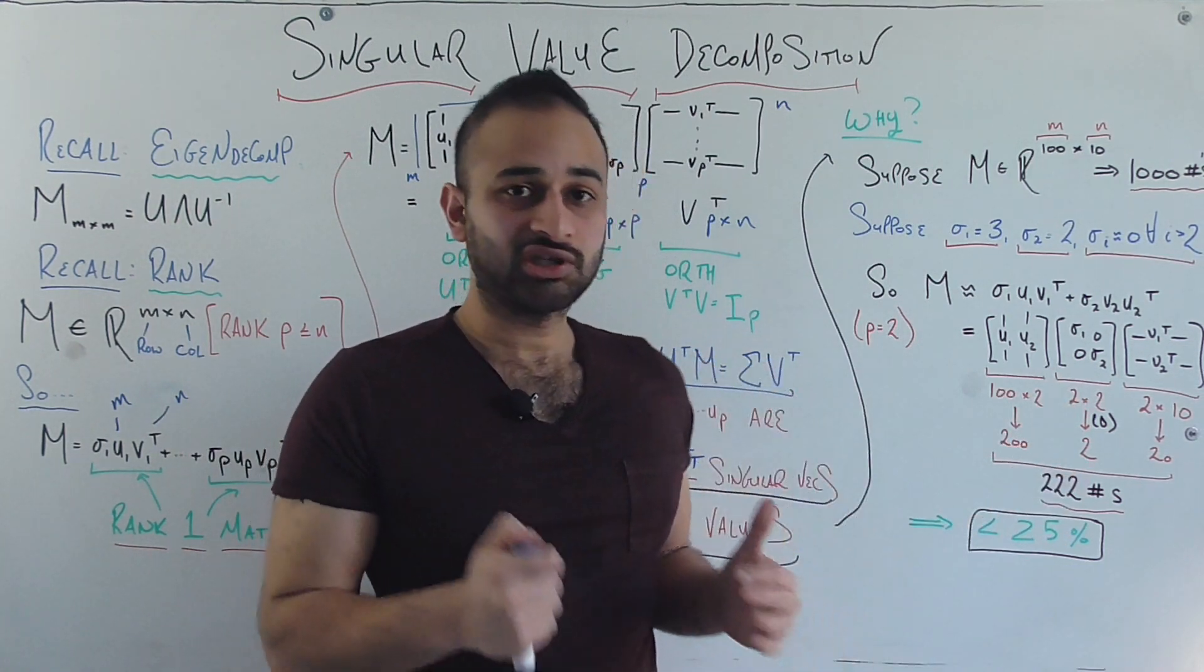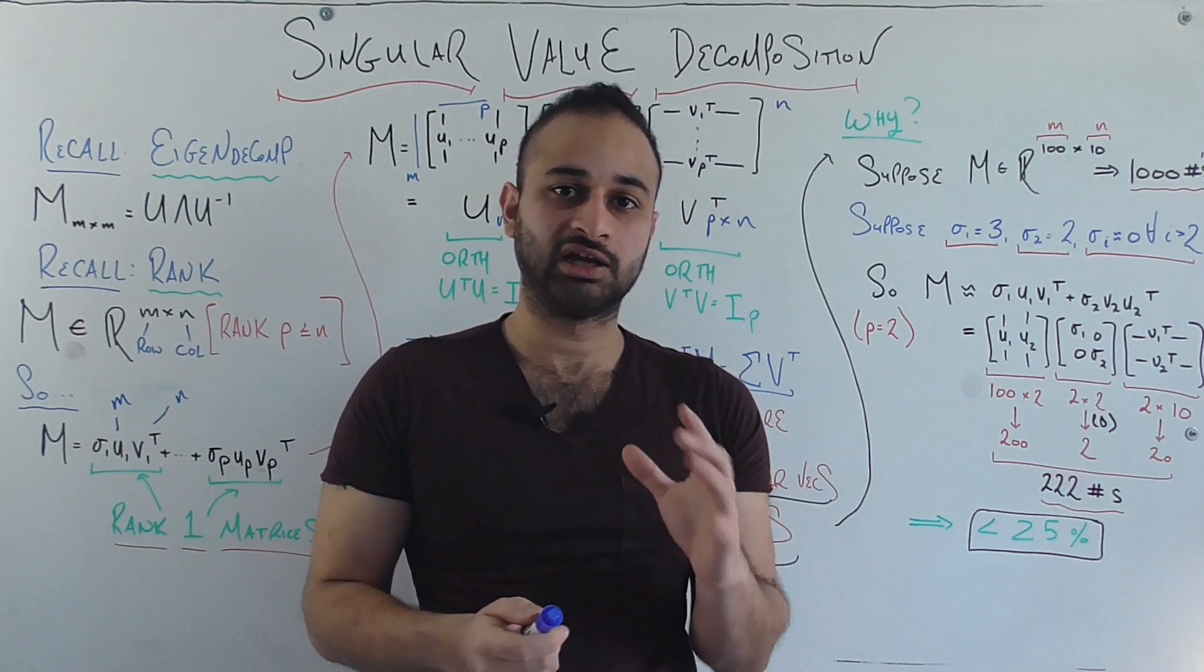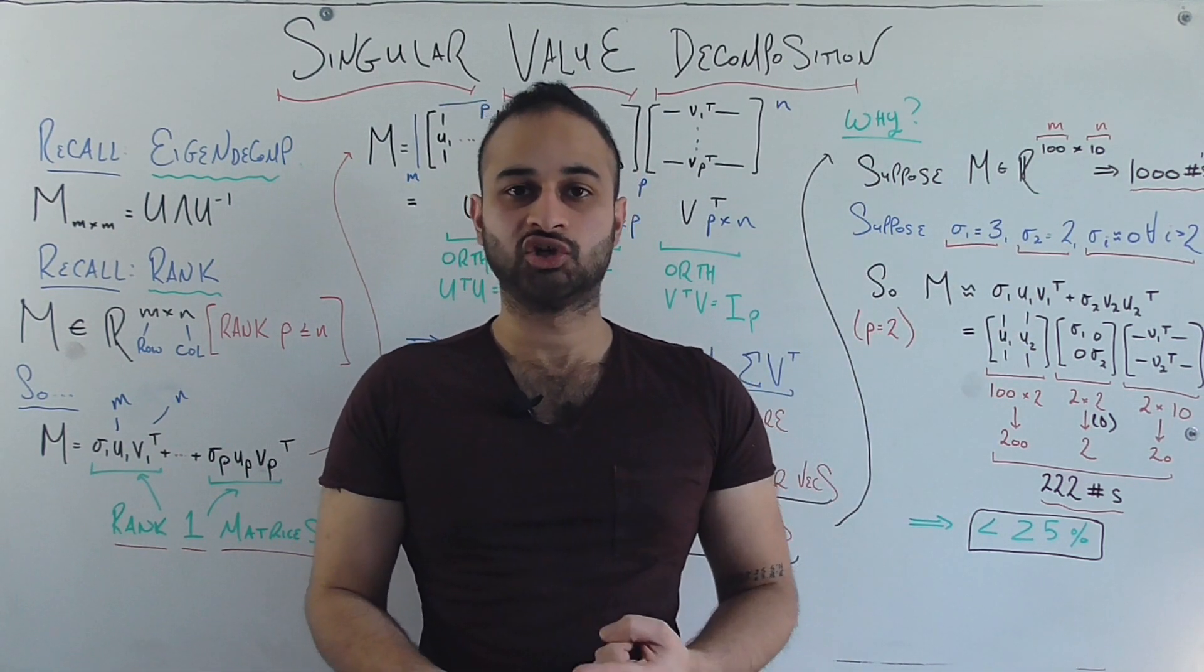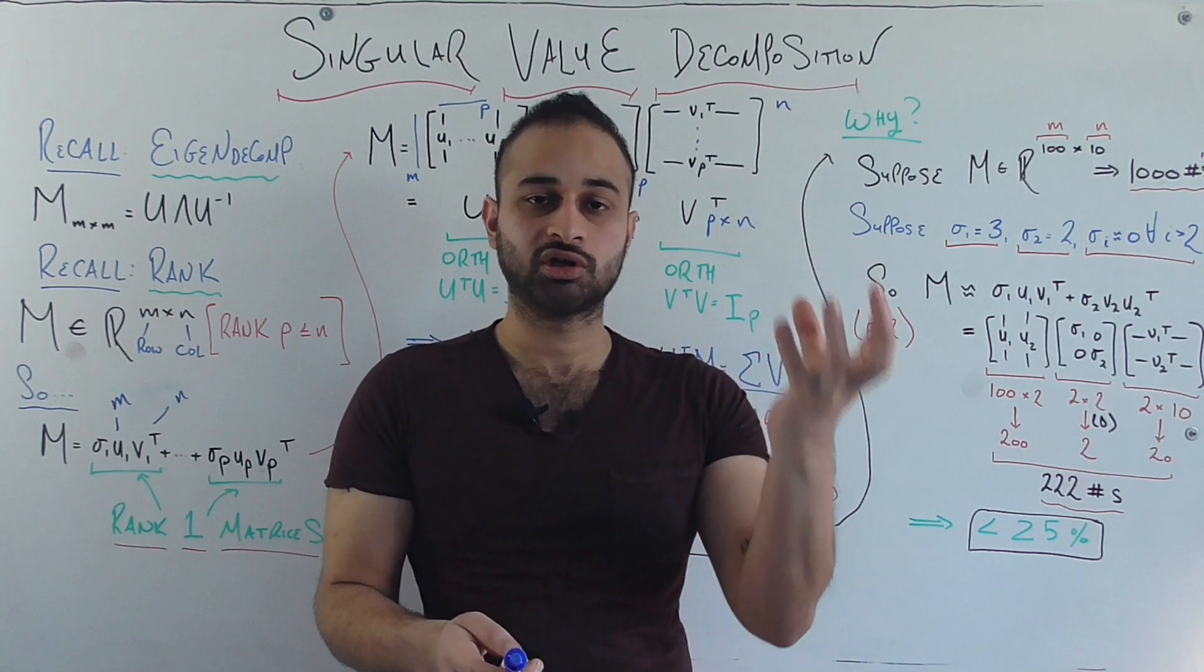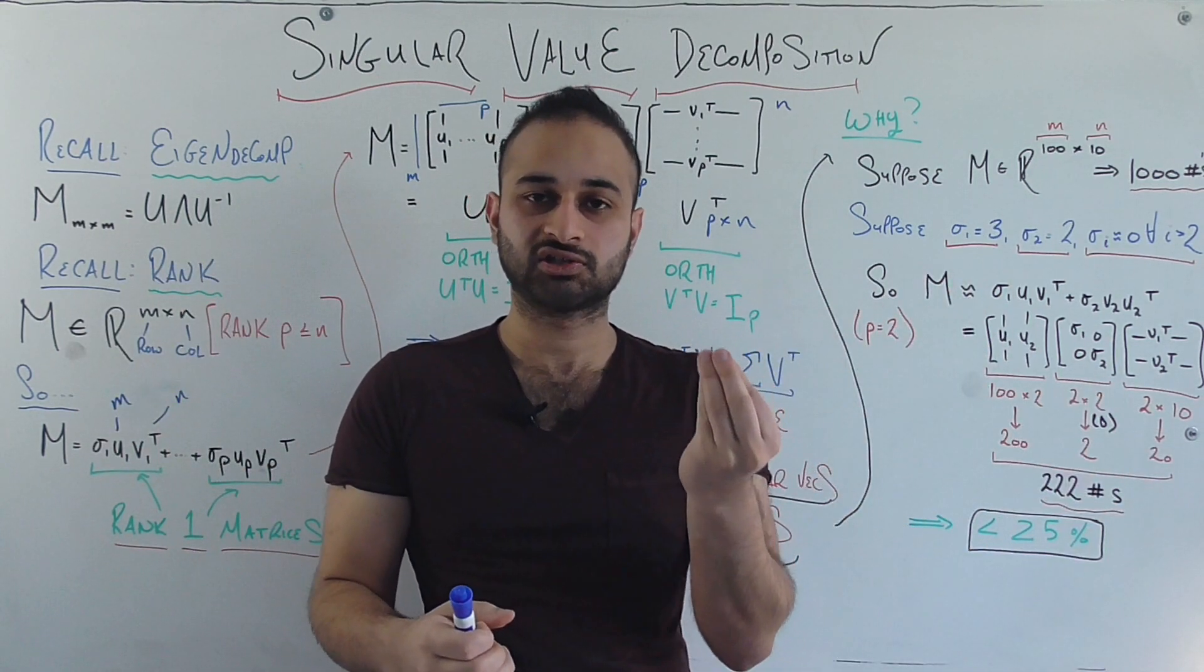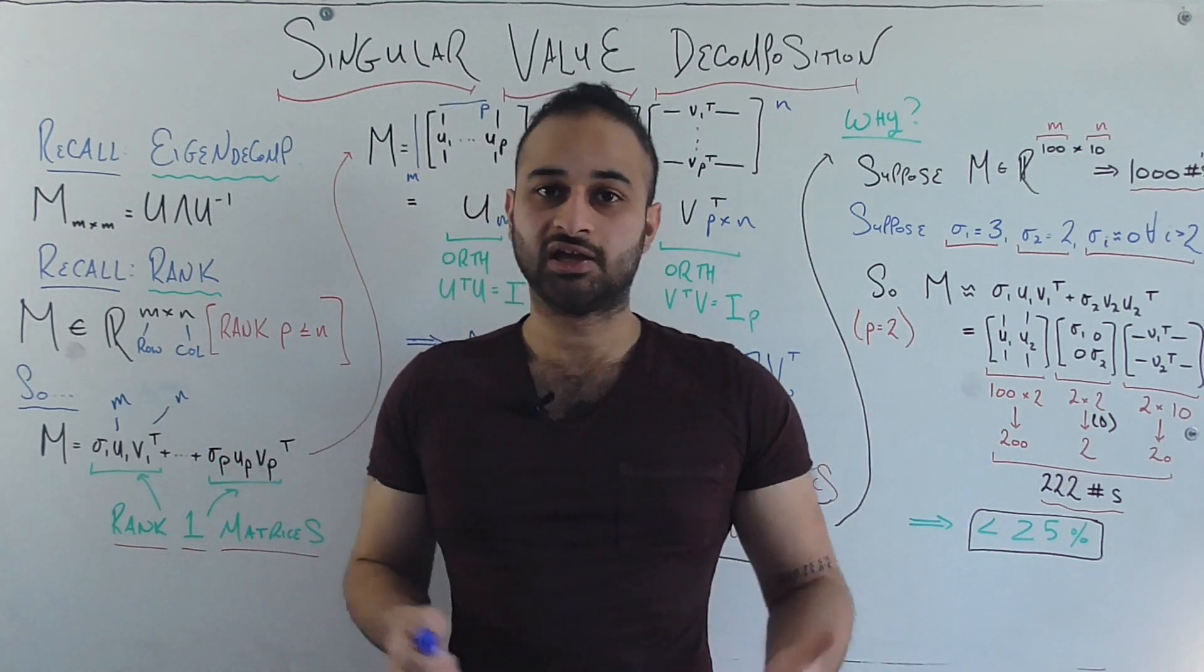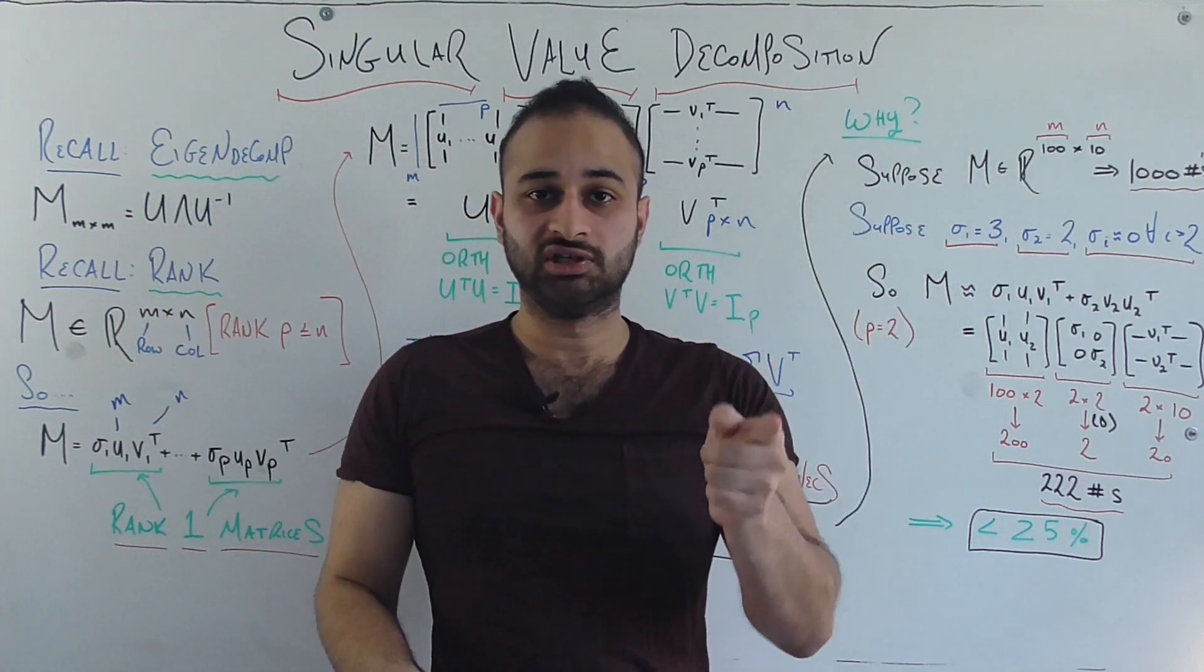So what we essentially achieved here is pretty awesome. It's better than a 25% reduction in how much data it would take to store this matrix. Before it took a thousand numbers, now it takes less than 250 numbers. So that's just one of the big applications of SVD for data science is that we can take a matrix that's potentially very large, and using the SVD, we can compress this into a much smaller space, losing very little data along the way. So I hope you learned about what the SVD is in this video and why it's useful for us as data scientists and economists and statisticians and so on. Any comments, please leave them below, and I will see you next time.